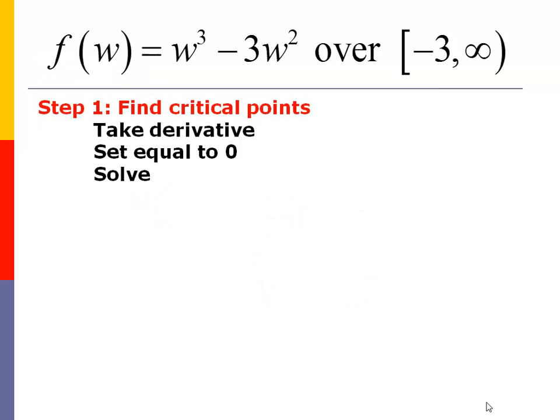Okay, so for this example, just like the other ones, we want to find the critical points. So that means take the derivative, set it equal to zero, and solve. We're looking for when the derivative is equal to zero because those are our potential max or mins. That's when things happen.